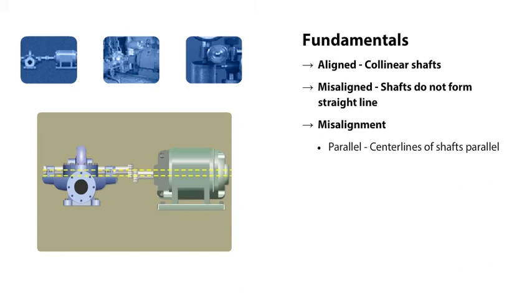With parallel misalignment, the centerlines of the shafts are parallel instead of collinear. The distance between the shaft's centerlines is called offset.